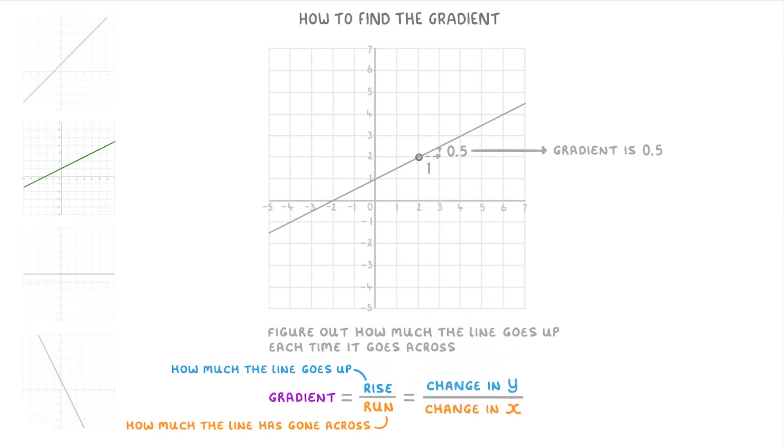You might also have seen it as change in y divided by change in x. Because the rise is basically how much the y value has changed by and the run is just how much the x value has changed by. So these two equations are basically the same thing which means you can use whichever one of them you want.